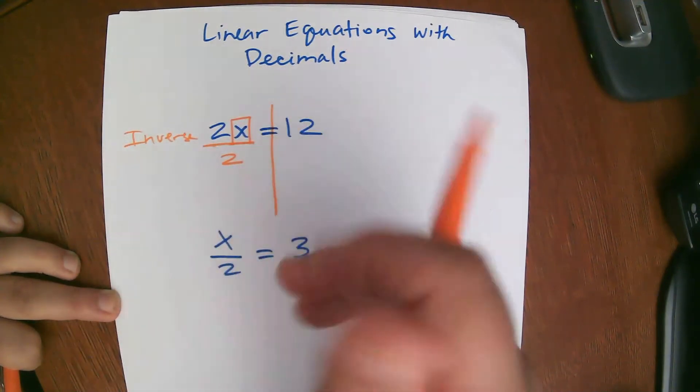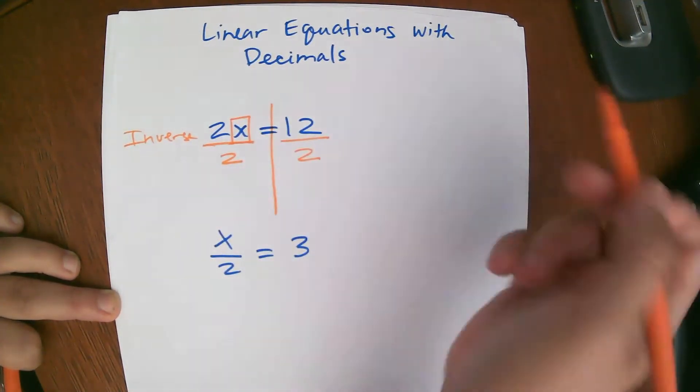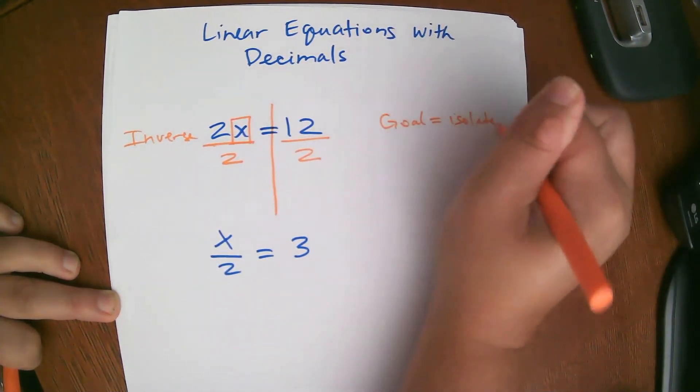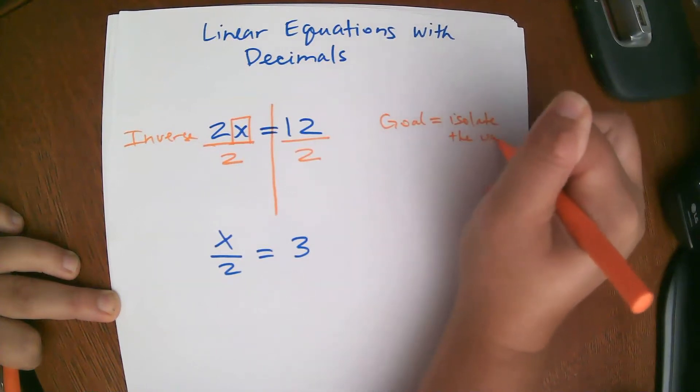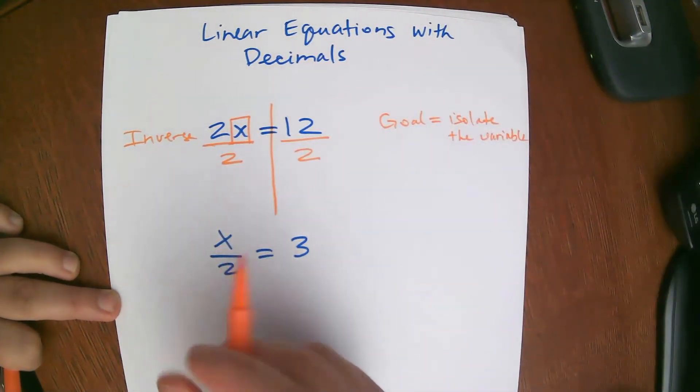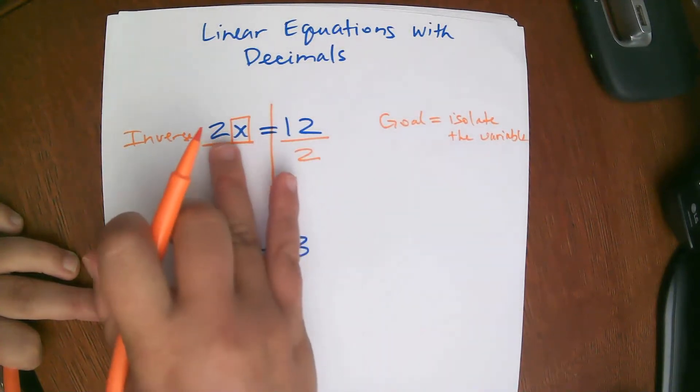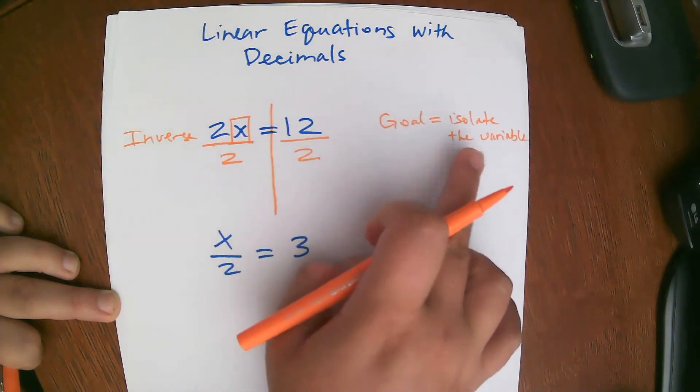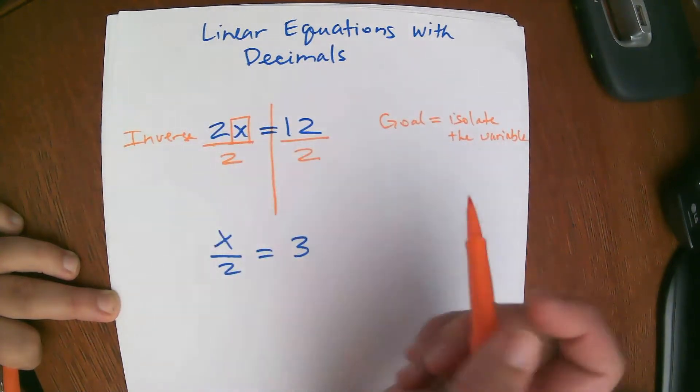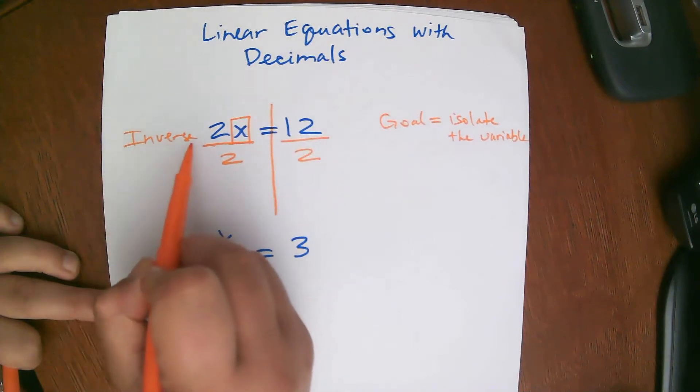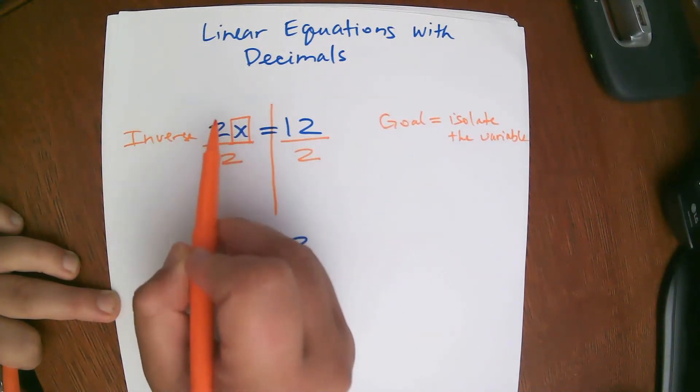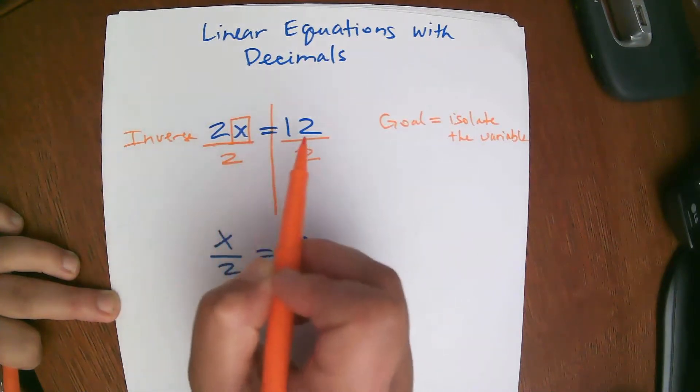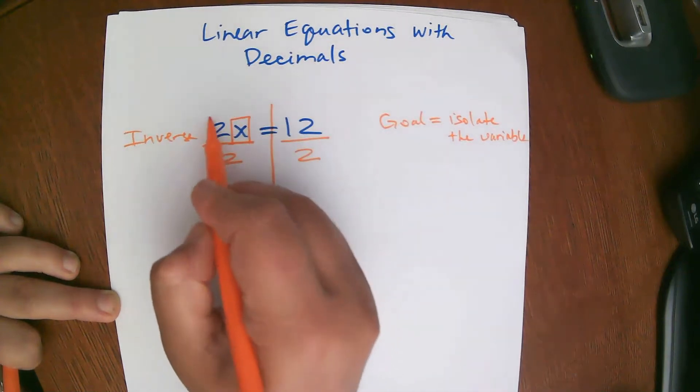And whatever we do to one side of the wall, we do to the other. So we're going to also divide by 2. Our ultimate goal here, and our goal for every equation, is to isolate the variable. That's our goal. So our goal in boxing our x, that's a visual cue to isolate the variable. It's almost like a little reminder. We need to isolate the x. So by doing that, we take the inverse operation of what's going on here. So it's 2 times x, so the inverse operation of 2 times x is divide by 2, divide by 2.